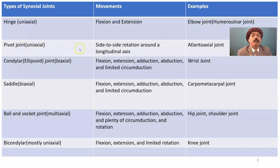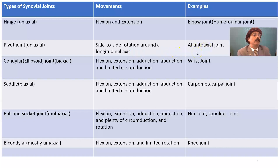Pivot joint has uniaxial movement occurring in one axis — side-to-side rotation around the longitudinal axis. That axis is maintained by the dens or odontoid process of the second cervical vertebra. Example: the atlantoaxial joint, the joint between the atlas (first cervical vertebra) and the axis (second cervical vertebra).